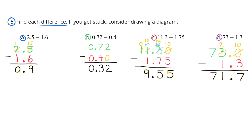D. 73 hundredths minus 1 and 3 tenths. 73 and 0 tenths minus 1 and 3 tenths equals 71 and 7 tenths.